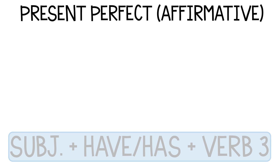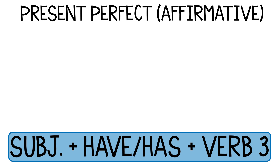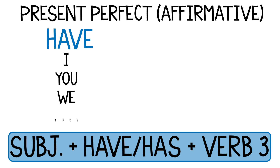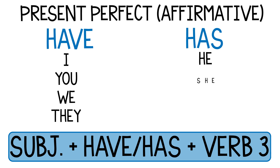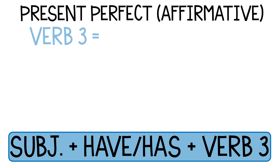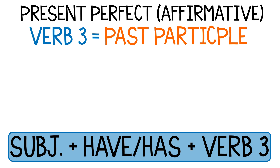The affirmative or positive structure of present perfect is a subject plus have or has plus verb three. We use have with the pronouns I, you, we, and they. We use has with the pronouns he, she, and it. Verb three is also known as the past participle.